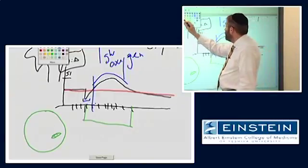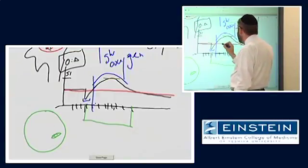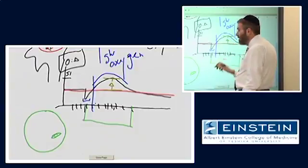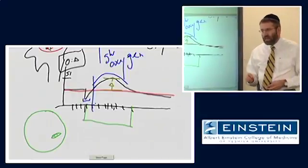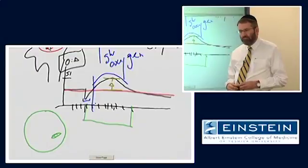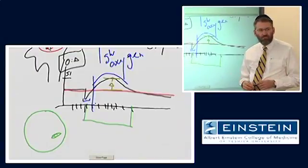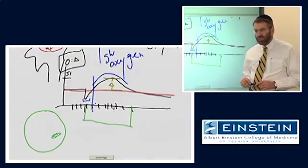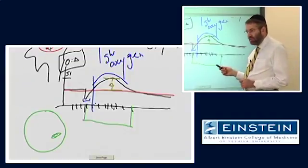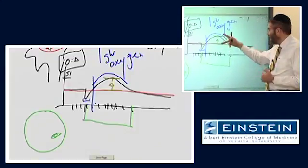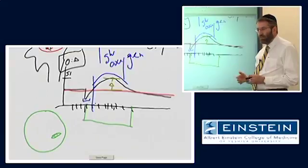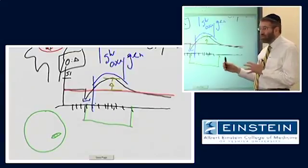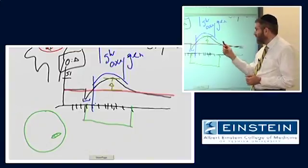Number two: how big is this signal change when I tap my fingers? It's a couple of percent — a very small signal. It's proportional to field strength, so as we go to higher field strengths the absolute magnitude gets greater, but we're talking about maybe two to three percent at most. It varies from brain region to brain region and from task to task, but it's a very small effect.